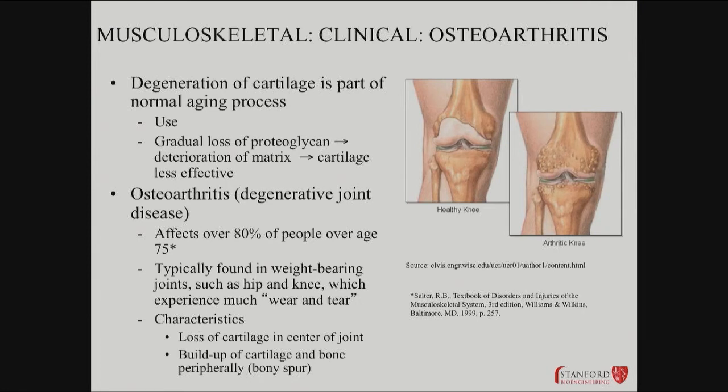Osteoarthritis is extremely common — it's a degenerative joint disease. It affects more than 80% of people over age 75. It tends to show up in the weight-bearing, wear-and-tear joints. It can be confusing — it's different from rheumatoid arthritis, which is an active autoimmune process where the immune system is attacking the joints. Osteoarthritis is not that; it's a chronic wear and tear condition.